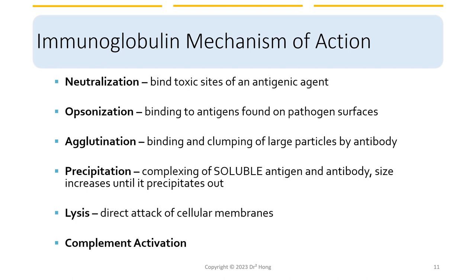How do antibodies work to defend against an infection? Here are six major mechanisms of action: neutralization, opsonization, agglutination, precipitation, lysis, and complement activation. Briefly: neutralization involves neutralizing the toxic side of an antigen; opsonization is coating the pathogen surface; agglutination is clumping larger particles together by antibodies; precipitation is complexing soluble antigens and antibodies and precipitating them out of solution; lysis involves direct attack of cellular membranes; and complement activation we've looked at before.